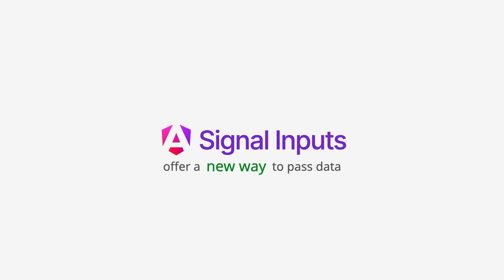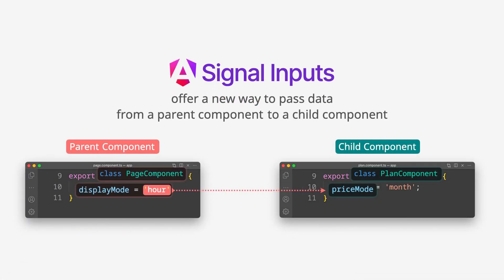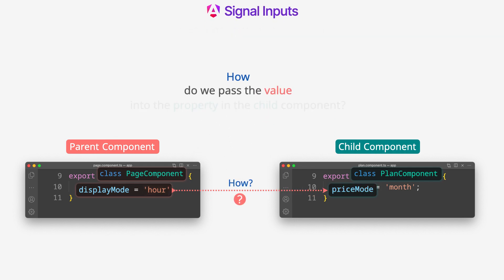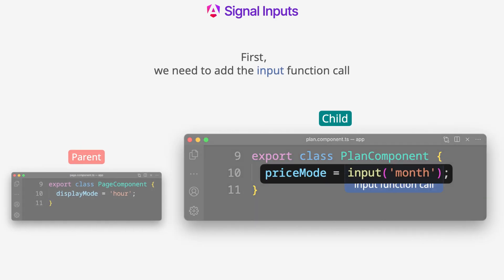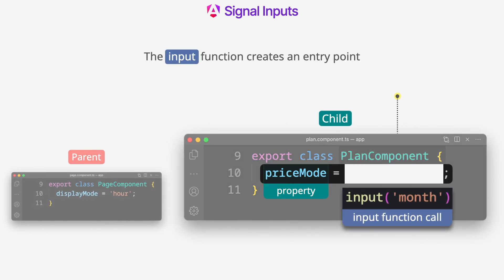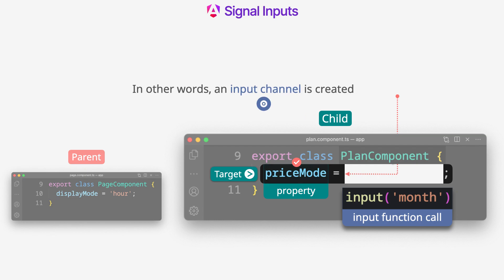Angular signal inputs offer a new way to pass data from a parent component to a child component. To pass the value into the property in the child component, we need to add the input function call to the property. The input function creates an entry point — or input channel — into the component for a value from outside.